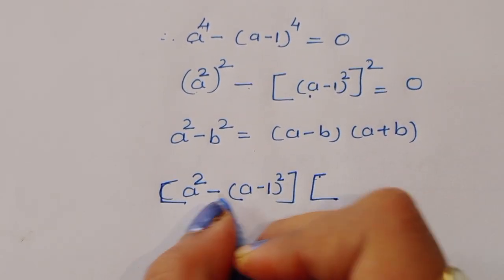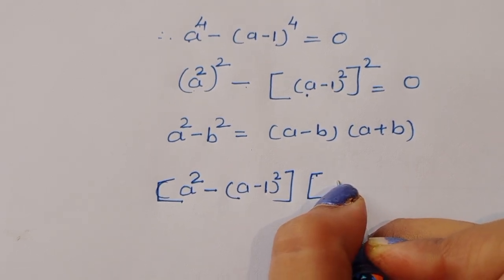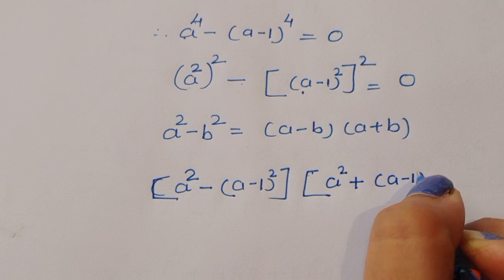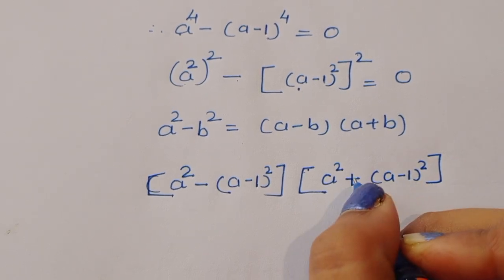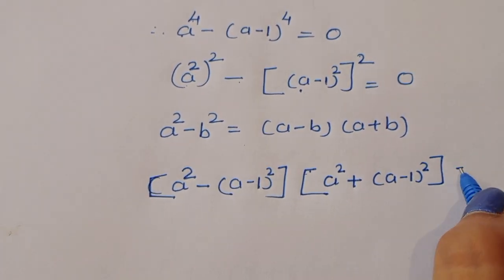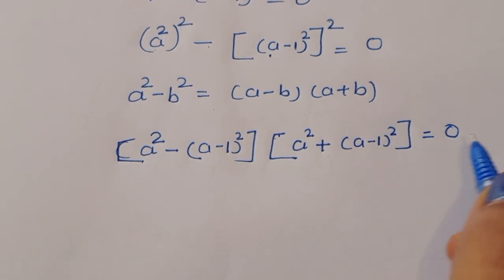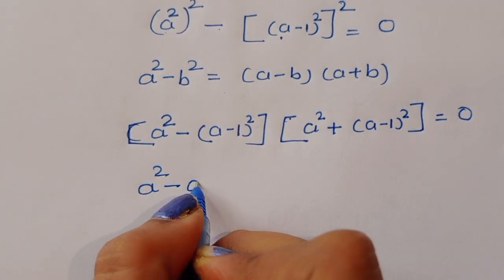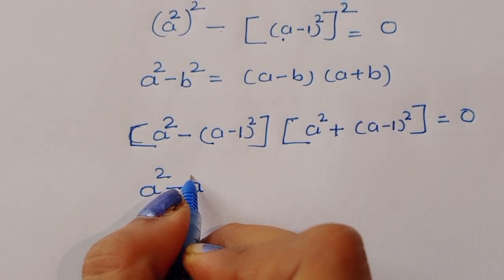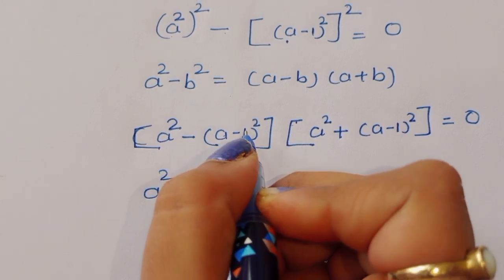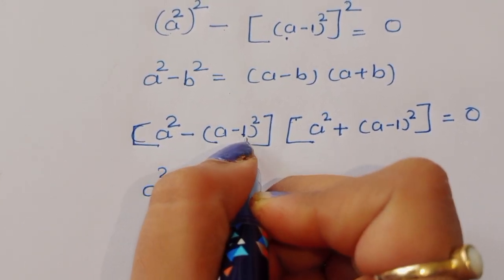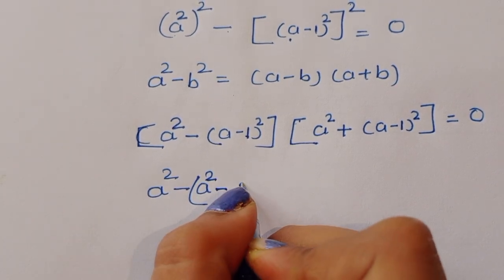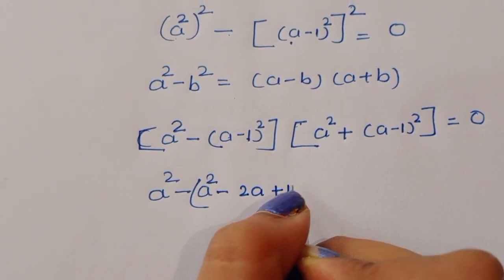Expanding: (a² minus (a-1)²) times (a² plus (a-1)²) equals 0. Now for the first factor, a² minus (a-1)², we apply the (a-1)² formula: a² minus (a² minus 2a plus 1).